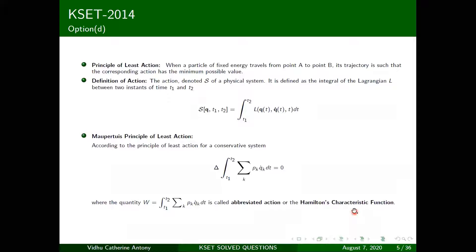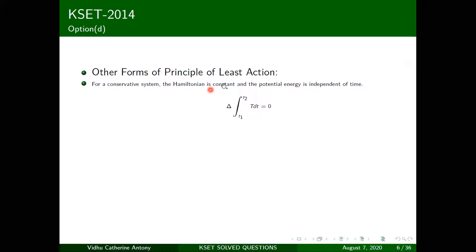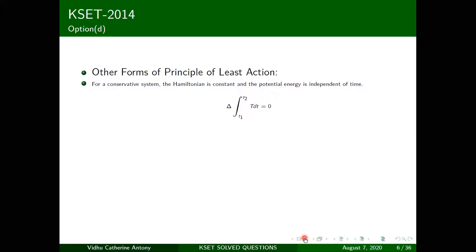I want you to go back and revisit the question on Hamilton's characteristic function W = ∫(t₁ to t₂) Σ p_k q̇_k dt. For a conservative system, the Hamiltonian is constant and potential energy is independent of time. In that case, the Lagrangian L = T − V and you can work with the time integral directly.